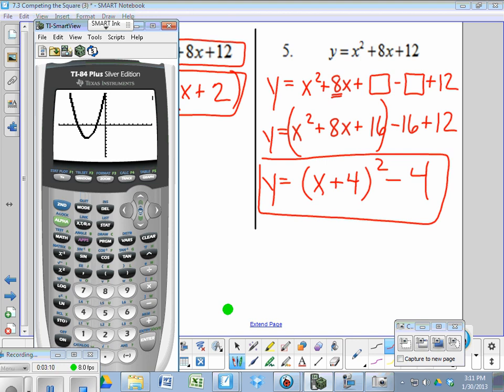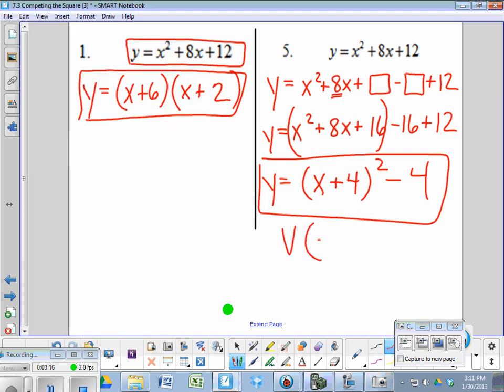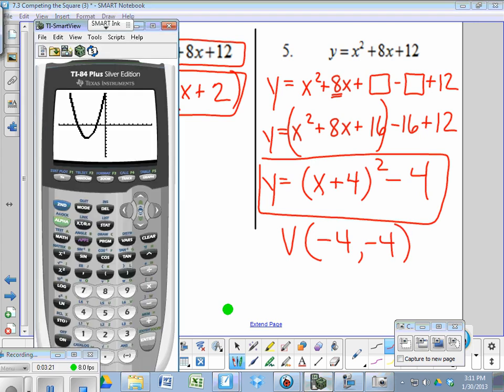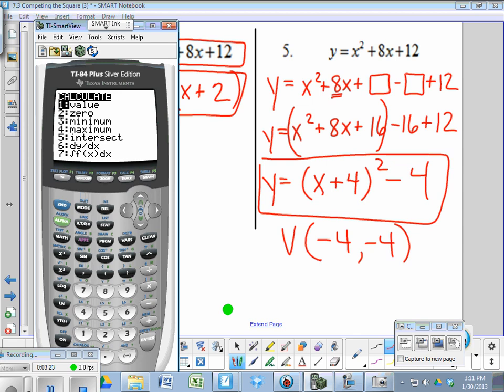Next on our calculator, we can go ahead and ask it to find the vertex. Since we're in vertex form, we know it's left 4 down 4. But you can confirm this on the calculator by doing second trace. Since it's a minimum, you're going to do option three. You want to move your cursor to the left of the minimum when it asks you for the left bound. Once you get to the left of the minimum, press enter. Move it to the right of the minimum for the right bound and press enter. And then hit enter again, and it will tell you that the minimum is negative 4, negative 4.